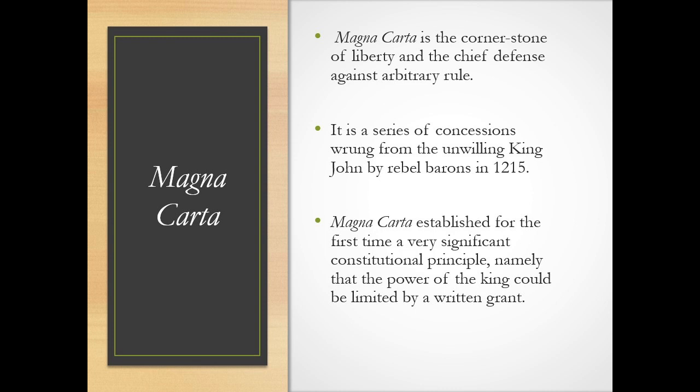In Magna Carta: "In future, no official shall place a man on trial upon his own unsupported statement without producing credible witnesses to the truth of it." The idea that a person has the constitutional right to face his accusers and hear the charges against him — these constitutional principles are finding their birth in 1215. Also: "No man shall be seized or imprisoned or stripped of his rights or possessions... except by the lawful judgment of his equals or by the law of the land." The guarantee of due process that we find in the Constitution, especially in the Bill of Rights, had its birth in 1215 in Magna Carta. You can go online and pull down a copy — it'll take you maybe 10 to 12 minutes to read it, and you'll be surprised how many elements reflect directly to our own contemporary understanding.